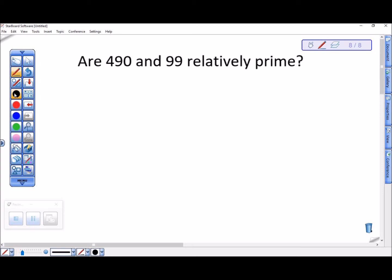Well, we can answer this question by just doing the normal thing. Let's try to find the greatest common factor and see if it is 1. 490 is probably 49 times 10. 49 is 7 times 7. 10 is 2 times 5.